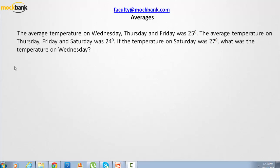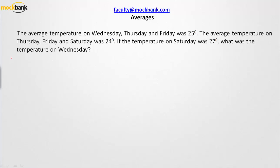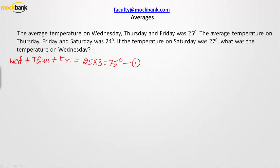Let us start writing this information. I'm going to solve this in a longer way so that we can develop a shortcut. So it says that Wednesday plus Thursday plus Friday — the average is 25 degrees. If the average is 25 degrees, the sum is going to be a total of 75 degrees. This is equation number one. Equation number two says the average temperature on Thursday plus Friday and Saturday is 24 degrees, so the total sum is 72 degrees.